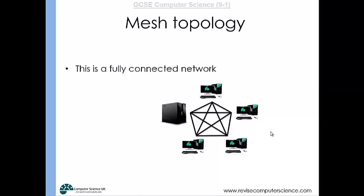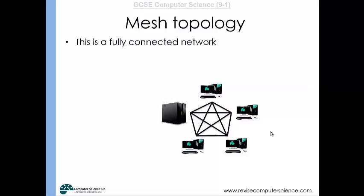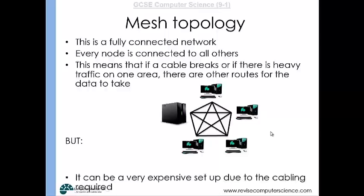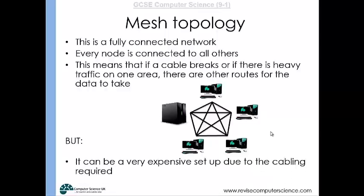With a mesh topology — a fully connected network — every node is connected to all other nodes. If a cable breaks or there's heavy traffic in one area, data can take alternative routes. The major drawback is the expense, as a large amount of cabling is required.